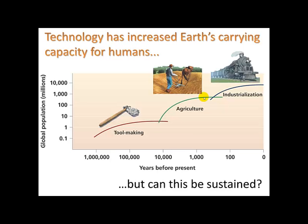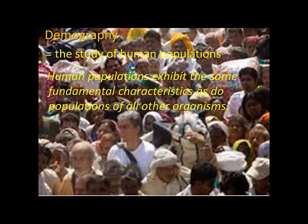Technology has increased Earth's carrying capacity for humans. But can this be sustained through tool making, through agriculture — a form of technology — and through industrialization? We have continually been able to provide for more and more humans on this planet, but can we keep it up? Part of the answer lies in demography, the study of human populations, which we often refer to as just demographics. Human populations exhibit the same fundamental characteristics as do populations of all other organisms.